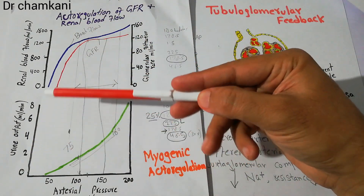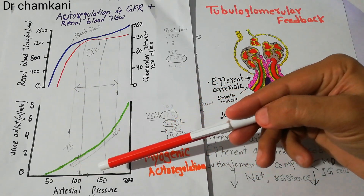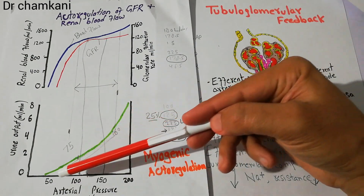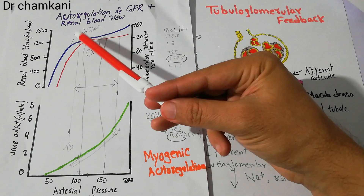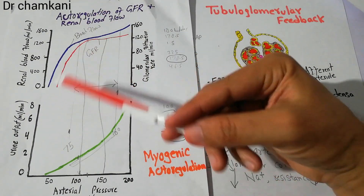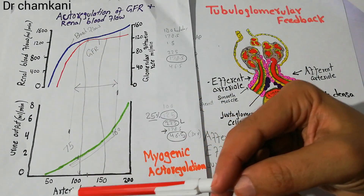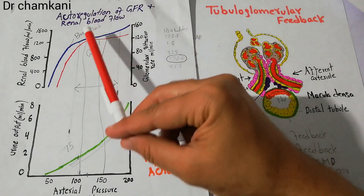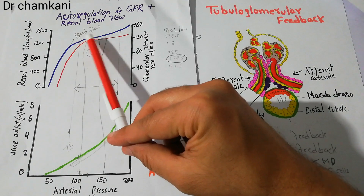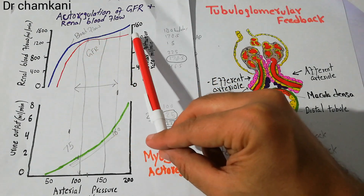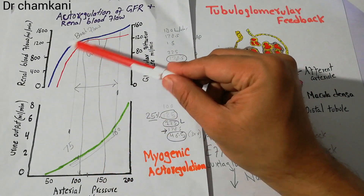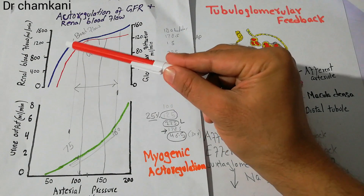These different curves show that when arterial pressure increases, urine output increases, and when it decreases, urine output decreases. But the GFR curve (red) and the renal blood flow curve are different — they do not constantly increase with increasing arterial pressure. Despite changing arterial pressure, GFR and renal blood flow remain nearly constant, though with very large changes in arterial pressure, both GFR and blood flow do decrease.